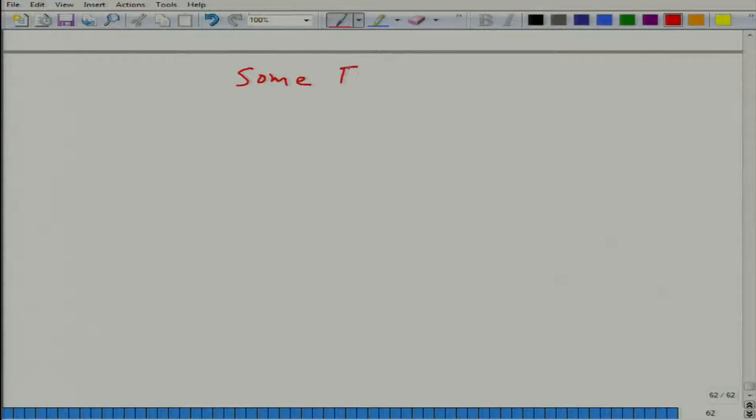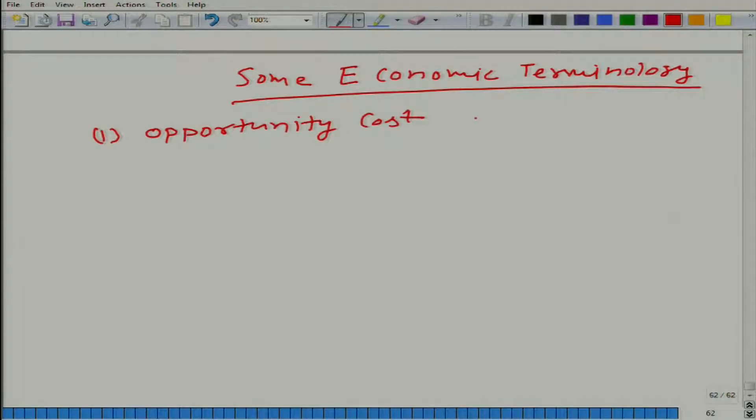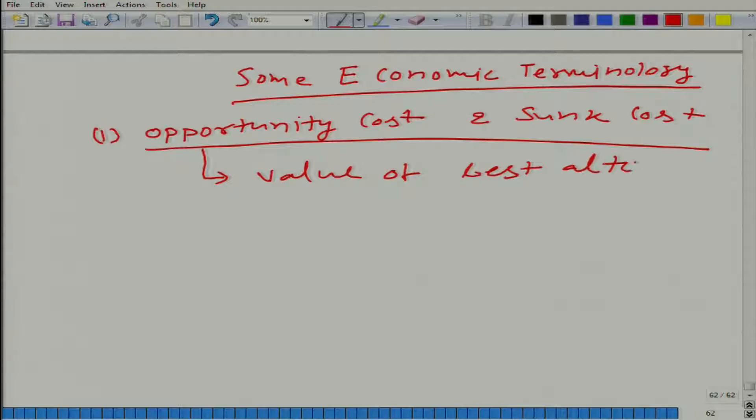Now, we are going to talk about some economic terminology before we move to another topic. First, we are going to talk about opportunity cost and also sunk cost. Opportunity cost is the value of best alternative foregone. Let us take it is not very clear from the definition, but let us take some example.